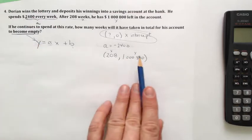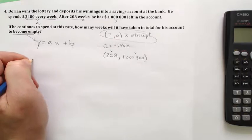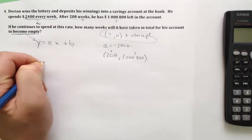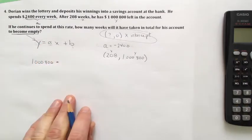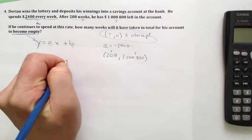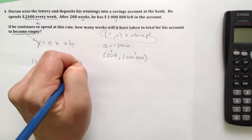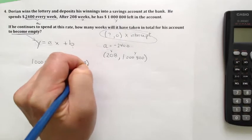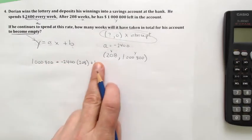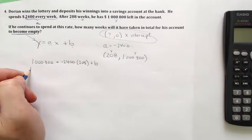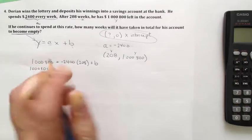So we're going to do the substitution. We're going to plug numbers in. Y, which is $1,000,800, will be equal to negative 2,400 times x, which is 208, plus b. So we're going to use this information to calculate that b. I'm just going to recopy the left side, and now we're going to do some calculations over here.